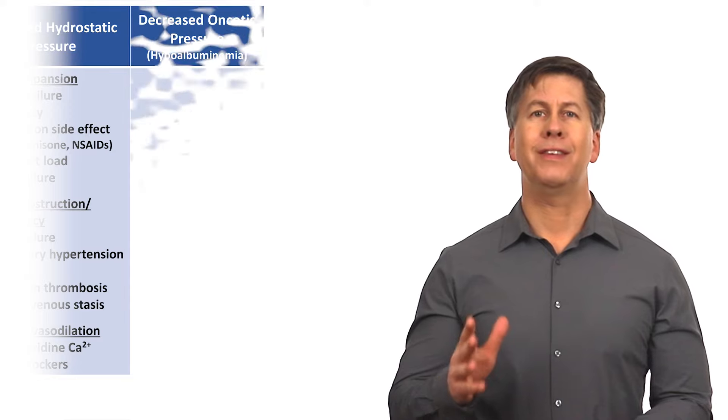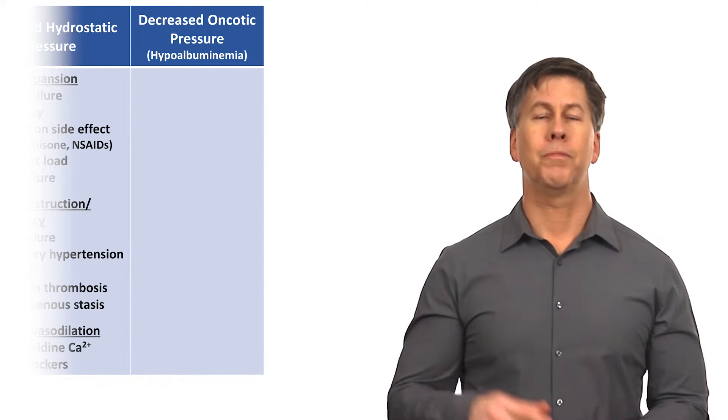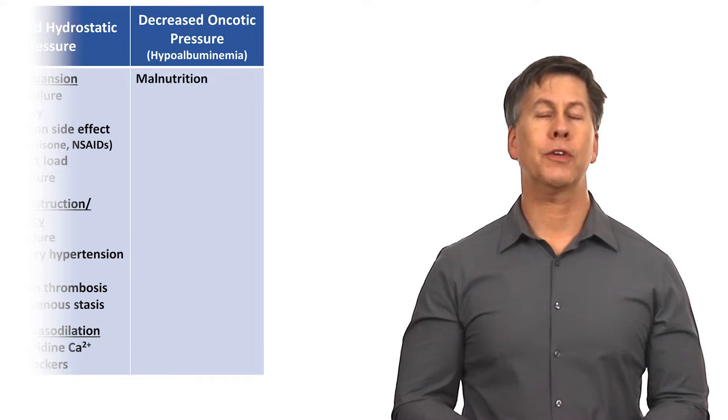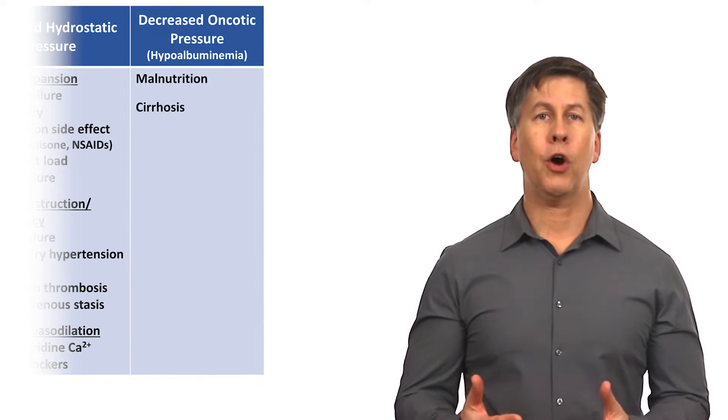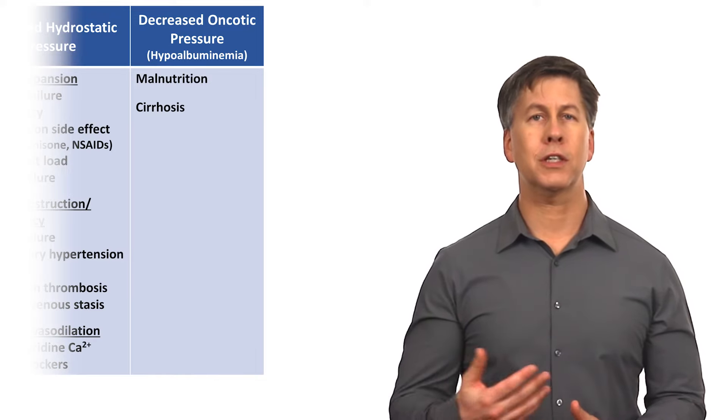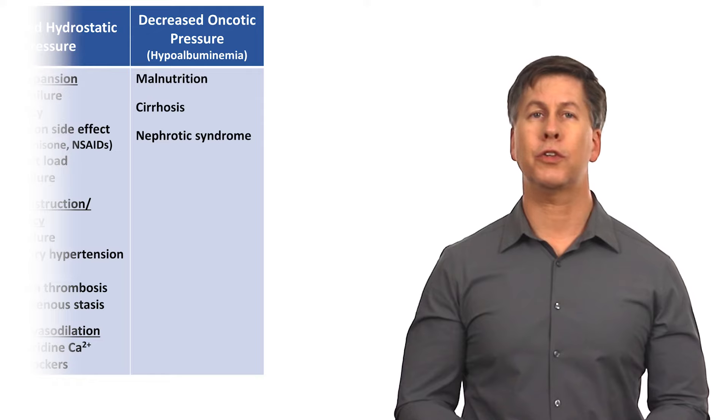That was a packed category. The next one, decreased oncotic pressure, has three notable conditions: malnutrition on account of decreased protein intake, cirrhosis shows up here again on account of decreased protein synthesis, and nephrotic syndrome on account of protein loss in the urine.